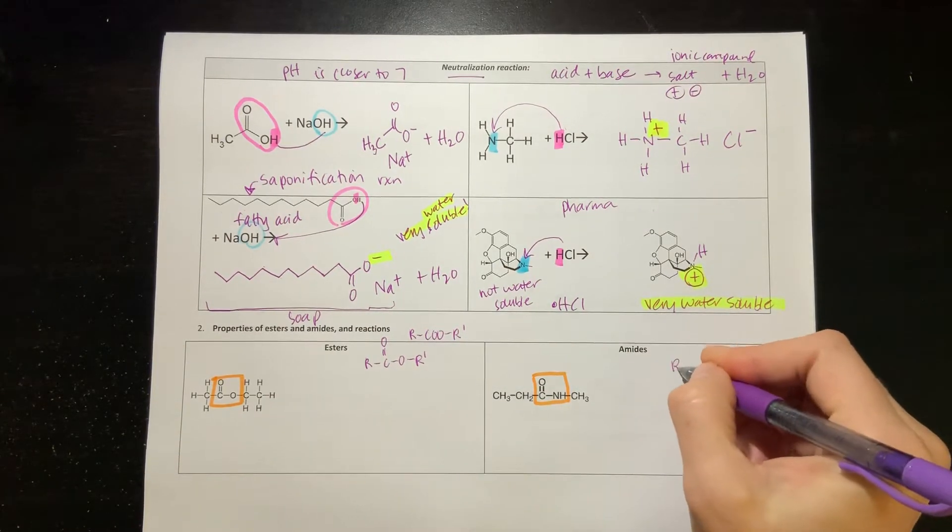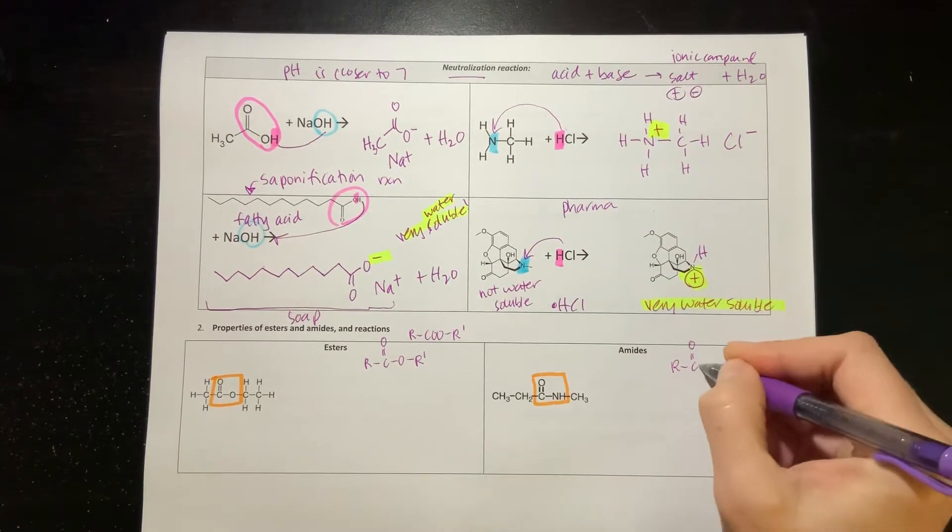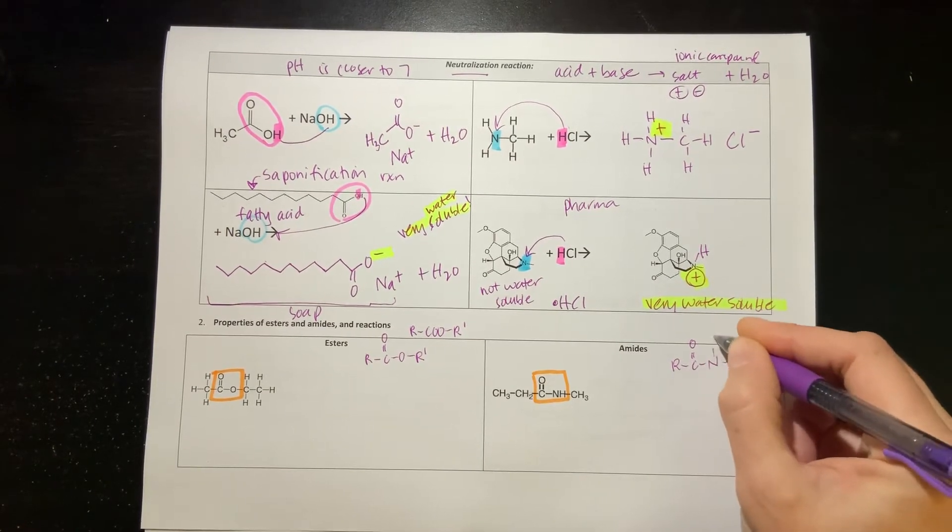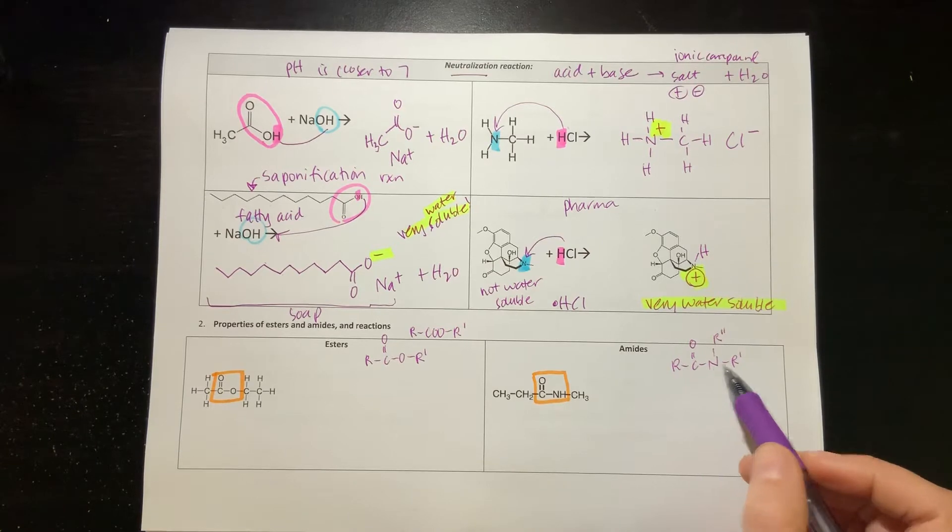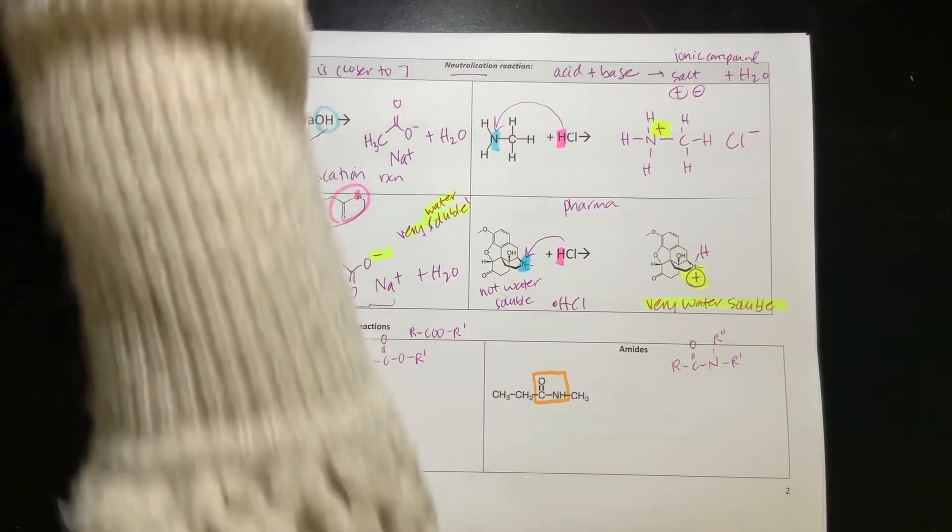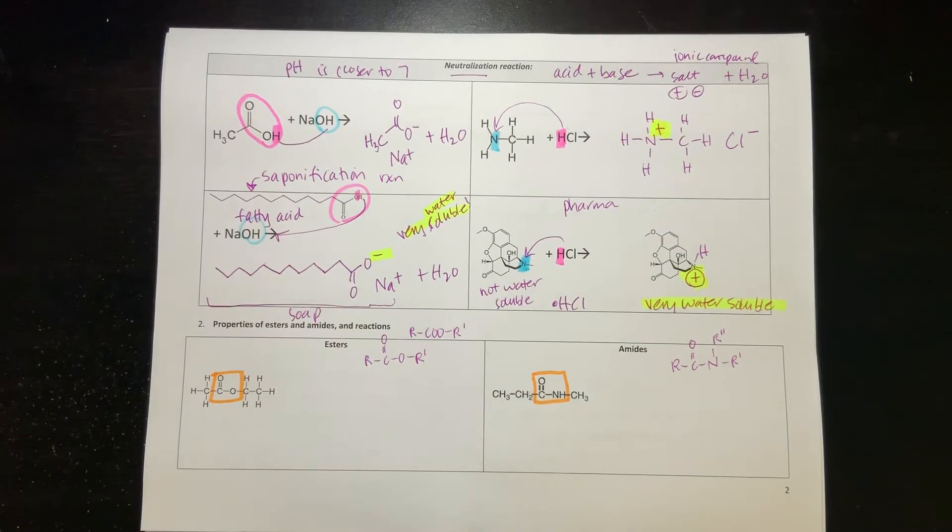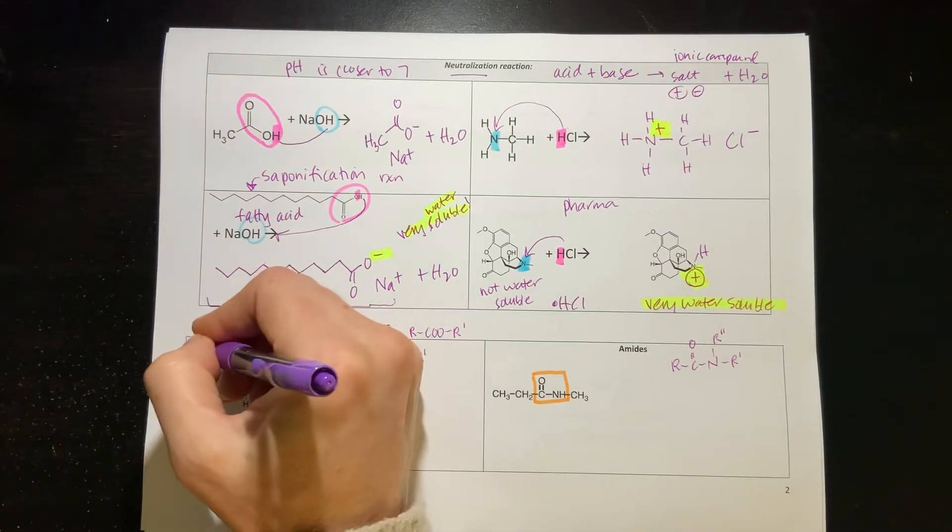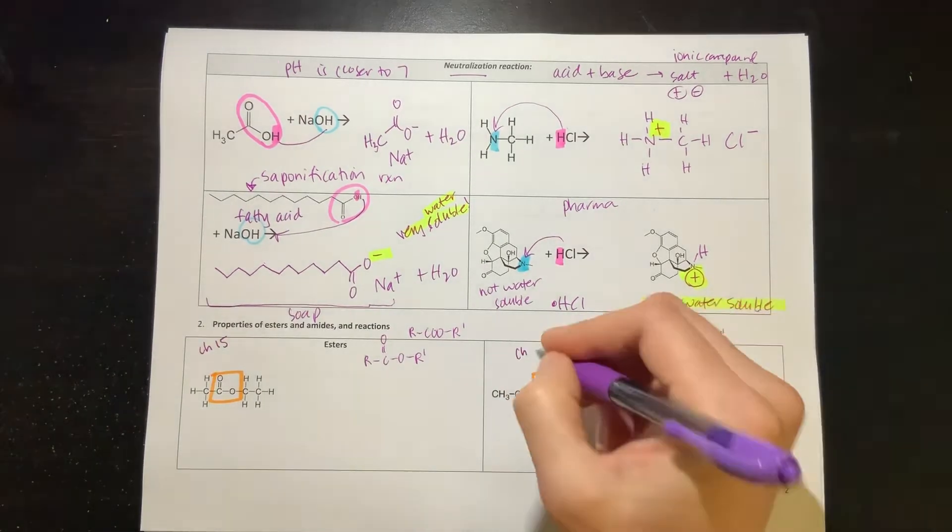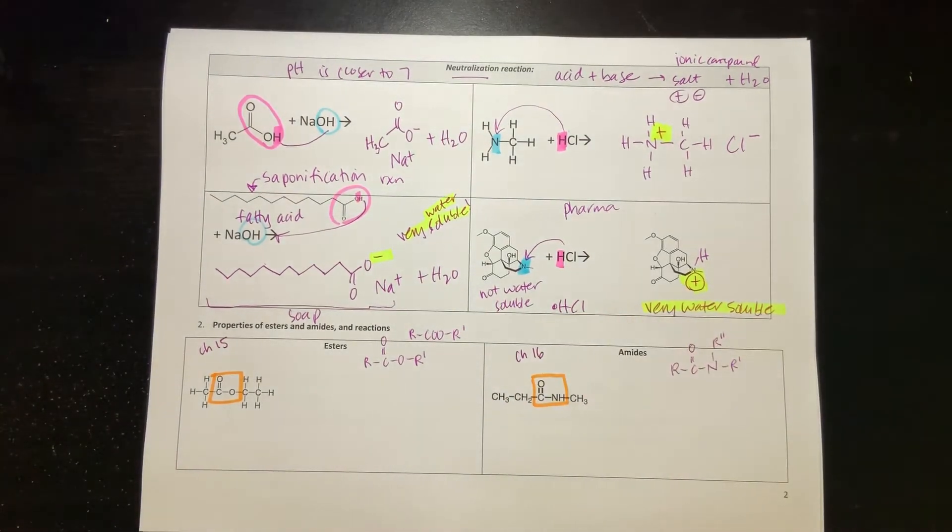For the amides, very similarly, we would have R-COO and then N, and then we could have an R prime, R double prime. There doesn't have to be a hydrogen, although this is how we're going to see it most often because that's how we see it in proteins. These esters we're going to see in chapter 15, and these amides we're going to see again in chapter 16, so we keep coming back to the same things.